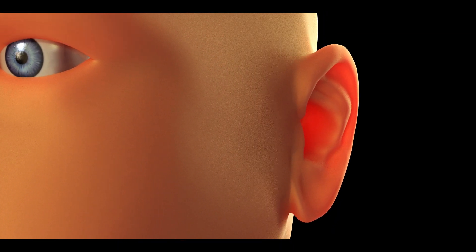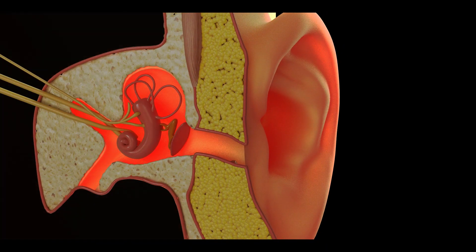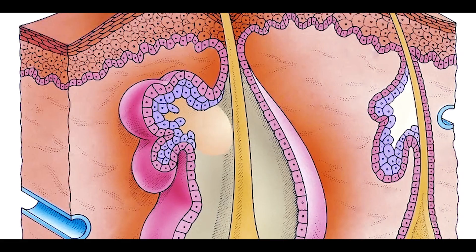Cerumen is made from a thick liquid released from ceruminous glands in the skin of ear canals, sweat from sebaceous glands, and dead skin cells.